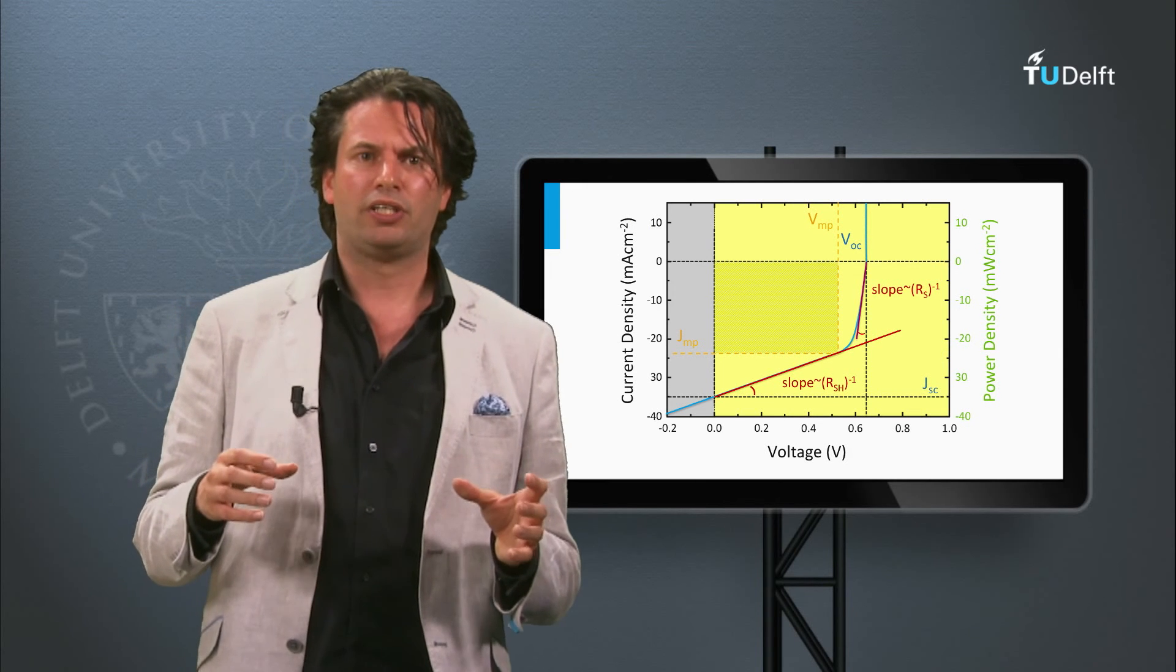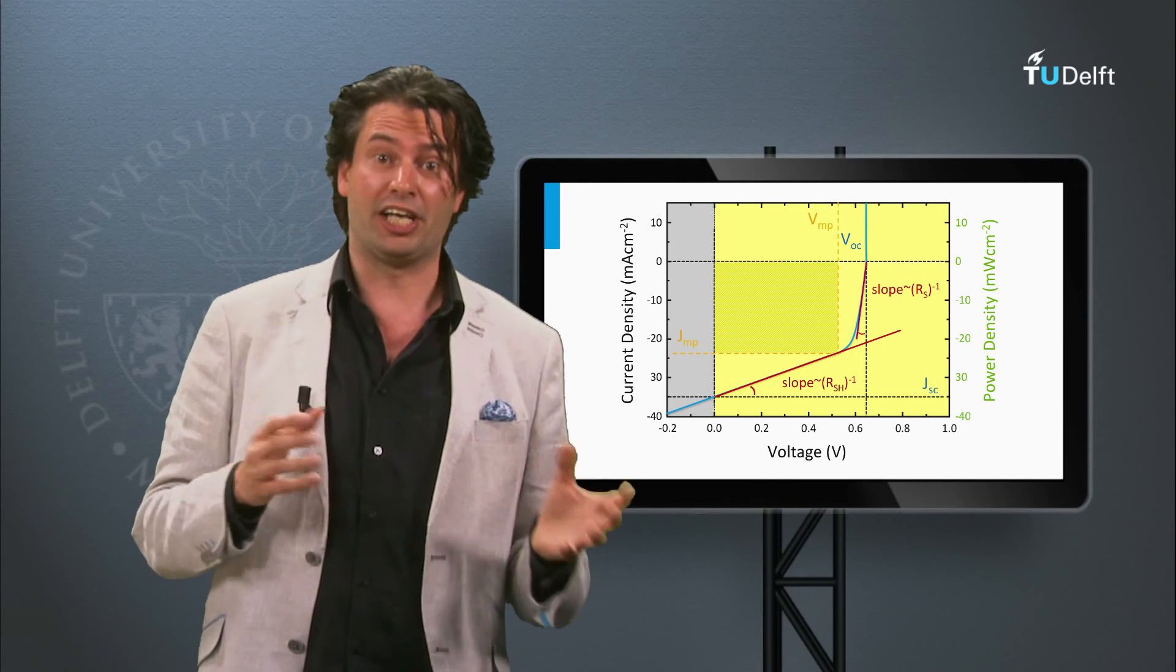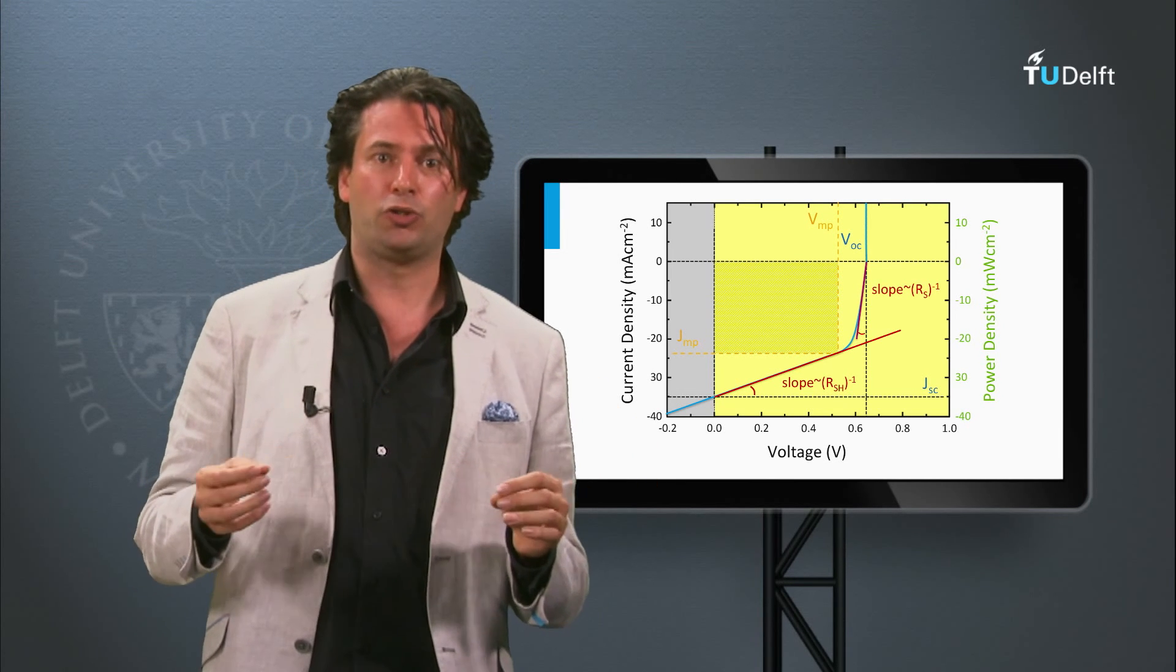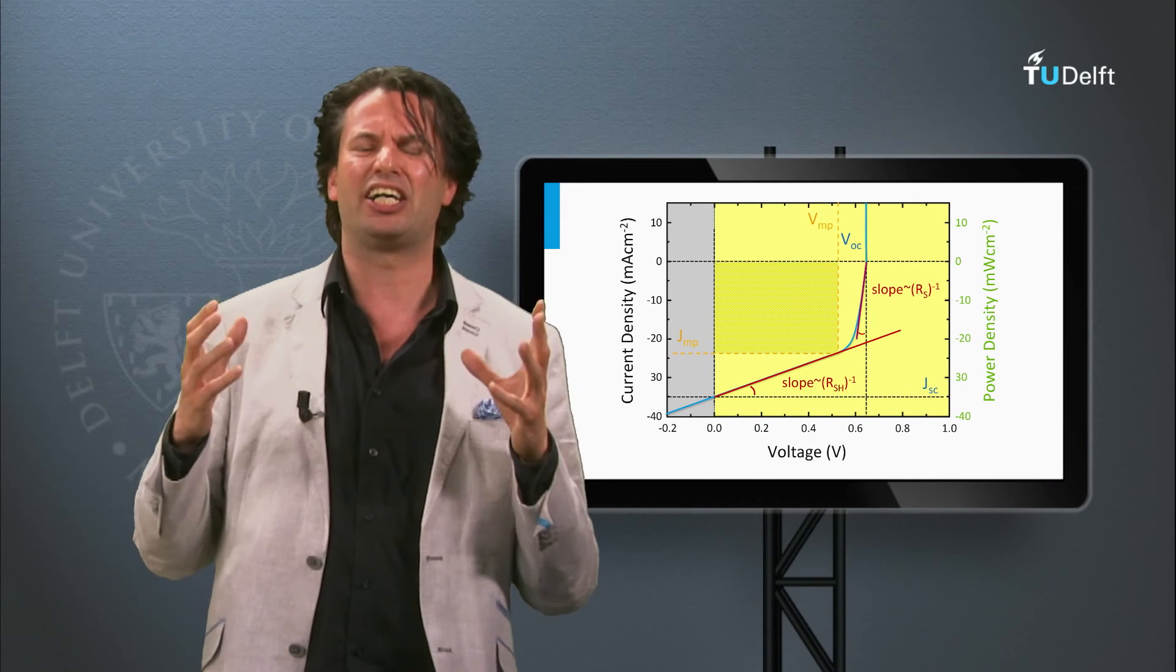In summary, the real solar cells and panels have series and shunt resistance. And in solar cell design and manufacturing it is important to minimize the series resistance and to make the shunt resistance as large as possible.